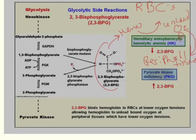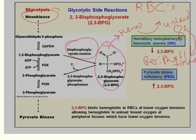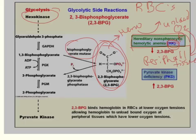Whenever you have a problem with the bisphosphoglycerate mutase, or a problem with hexokinase in red blood cells, you get a lower concentration of 2,3-bisphosphoglycerate, and it causes a hereditary non-spherocytic hemolytic anemia. It's caused primarily by problems with the hexokinase enzyme inside red blood cells, resulting in low oxygen being unloaded to peripheral tissue and hemolytic anemia.